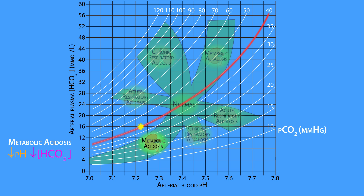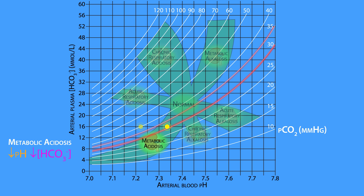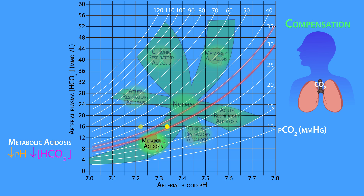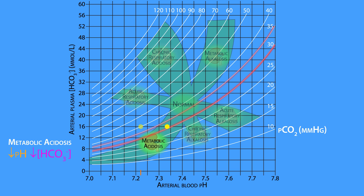The body compensates by lowering the PCO2 from 40 to somewhere between 35 and 30 millimeters of mercury. It does this by increasing the respiratory rate, which blows off more CO2 and thus lowers the PCO2, which helps return the pH closer to 7.4.